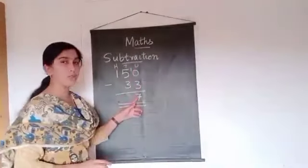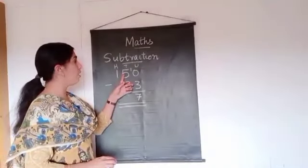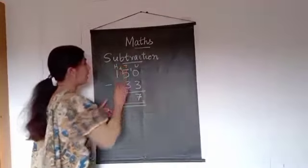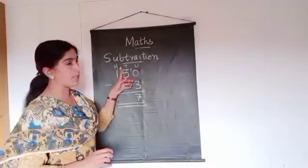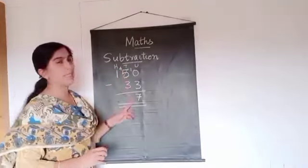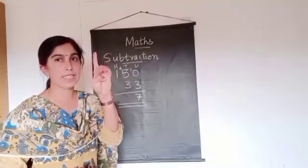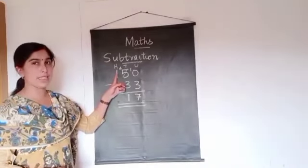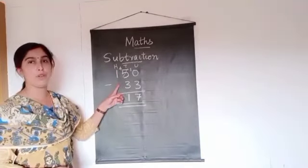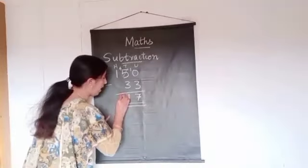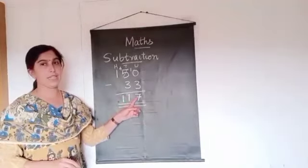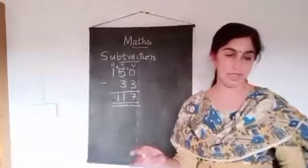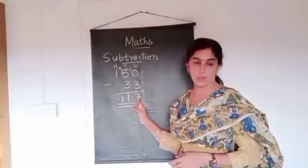We already borrowed one from the tens place, so now it is four. Strike out the five and write four. Now it is four tens only. From four tens you take three — remaining is one. Then the hundreds place: one hundred is there with no change; we don't subtract anything from it. So you write one. You will get one hundred and seventeen. Baby tortoise is one hundred and seventeen years younger than mummy tortoise.